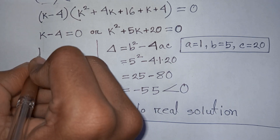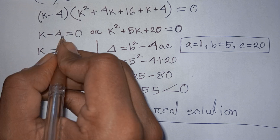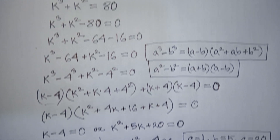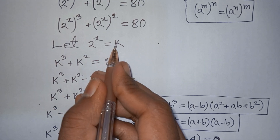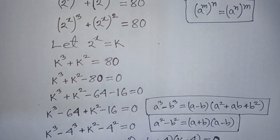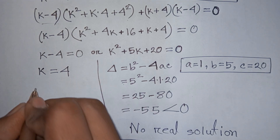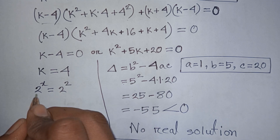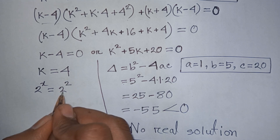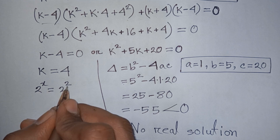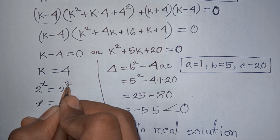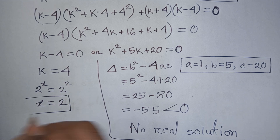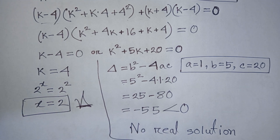From k minus 4 equals 0, taking minus 4 to the right side gives k equals 4. Remember that k means 2 power x, so 2 power x equals 4, which is the same as 2 power 2. Since the base is the same, the powers must be equal, so x equals 2. This is our final answer.